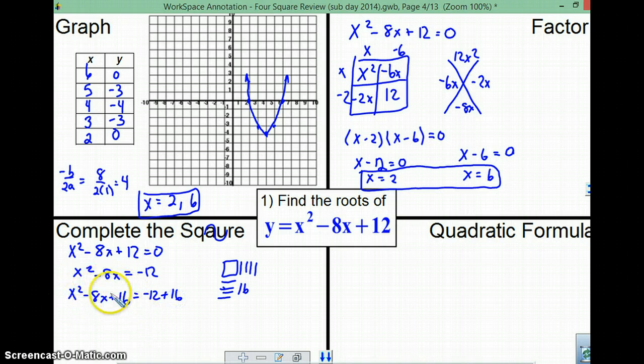Okay? Now, we can factor this side. We know it's a perfect square trinomial. So, we can say that this is equal to x plus, take the square root of this, x plus 4, square, combine these, equals 4.